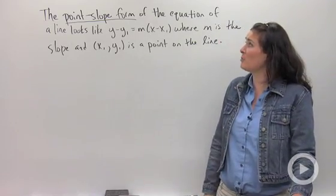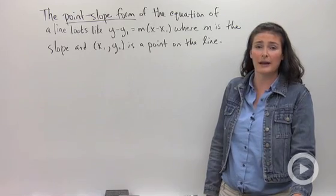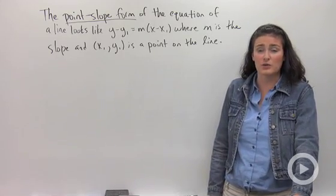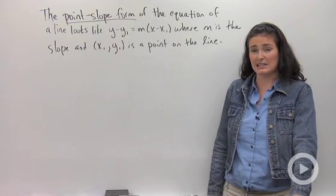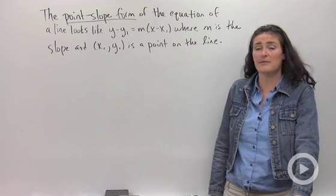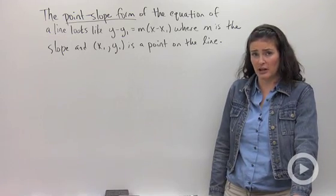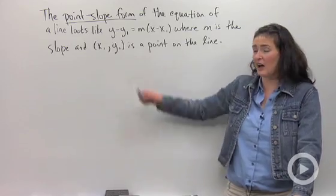The point-slope form of an equation of a line looks like y minus y sub 1 equals m times the quantity x minus x sub 1, where m is the slope and x sub 1 comma y sub 1 is a point on the line.